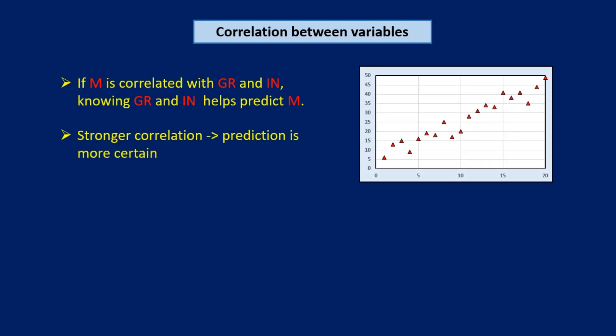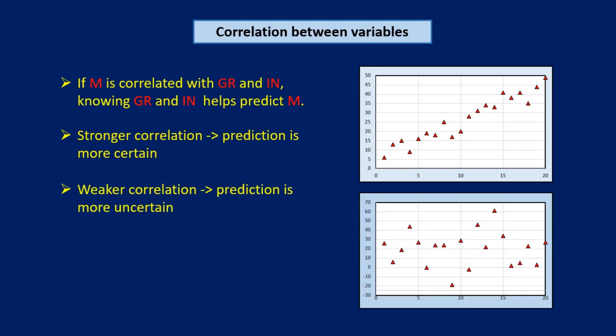As I mentioned at the beginning of class, we say that two variables are correlated when variations in the values of one tend to be associated with variations in the values of the other. And when this is true, knowing the value of x can be useful for predicting the corresponding value of y, as we see here for m versus gr and m versus in. Correlation can be strong or weak. When the correlation between x and y is strong, variations in x explain quite a lot of the variation in y, and predictions of y based on knowing the value of x are more certain. When correlation is weak, variations in x explain very little of the variation in y, and prediction of y is more uncertain.